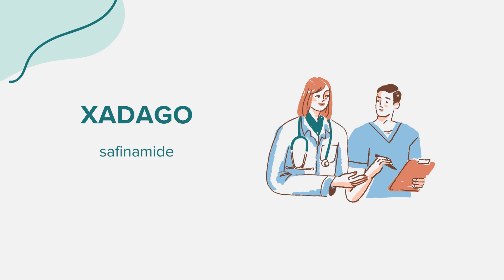Always follow your doctor's prescribed dosage for Xadago. Typically, the initial dose for Parkinson's disease is 50 mg orally once a day. Depending on individual needs and tolerability, this may be increased to 100 mg orally once a day after 2 weeks. It's essential to note that Xadago should always be taken in combination with levodopa and carbidopa.